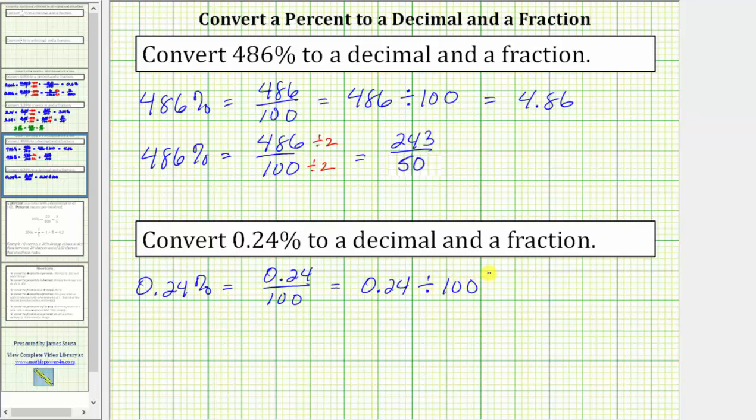To divide by 100, we move the decimal point to the left two places. Moving the decimal to the left two places, we have one and then two. Fill in the missing digit with a zero, which gives us 0.0024.